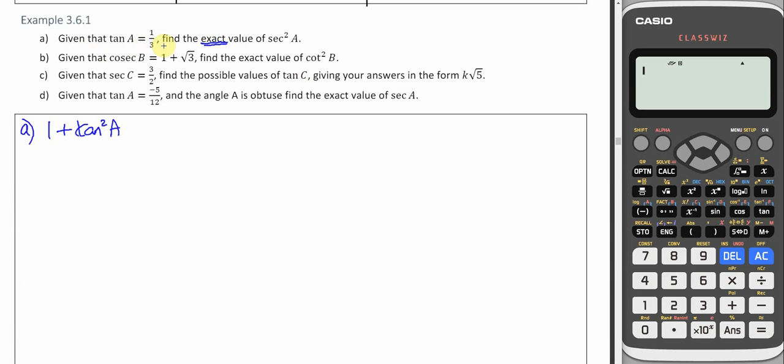Use the identity: 1 plus tan squared is sec squared. So 1 plus tan squared A will always equal sec squared A. And it's sec squared A that we want.